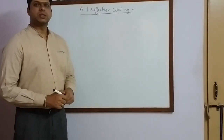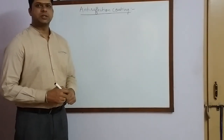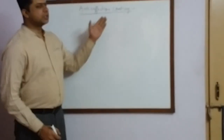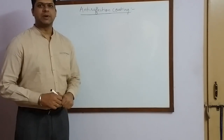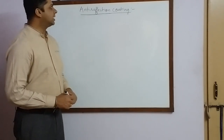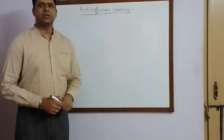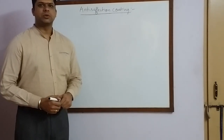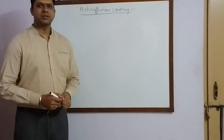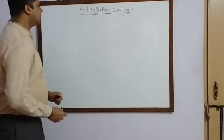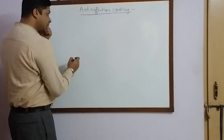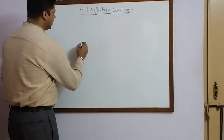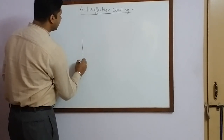In this lecture we are going to discuss anti-reflection coating. Anti-reflection coating is a direct application of the interference of light. These anti-reflection coatings are used in the lens of the camera in order to avoid excess reflection of light from the lens surface. Now let us look at the construction of anti-reflection coating.